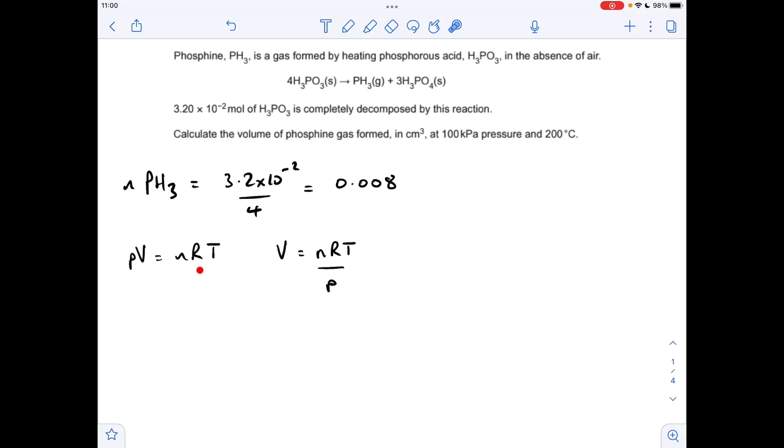So we'll bring in the ideal gas equation and rearrange for V, so we get nRT over P. We'll just put the numbers in. Just be careful with the unit conversions. We've just calculated the moles are 8.314, temperature needs to be in Kelvin, they've given it in degrees C, so we need to add 273 onto that, so we get the 473.